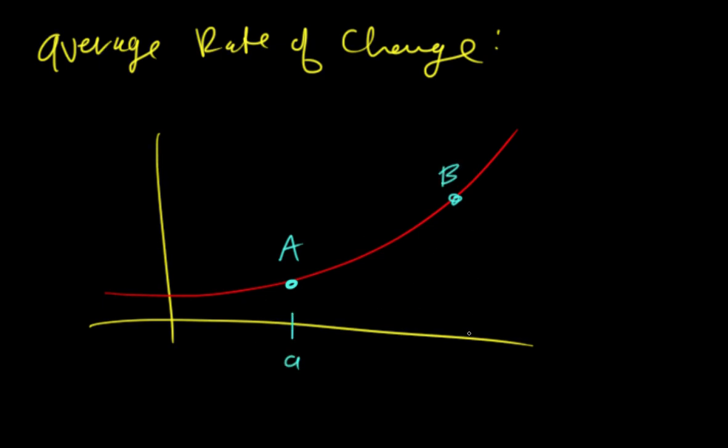This would be little a, this would be little b, so this would be f of a, this would be f of b, and if we define everything like that.